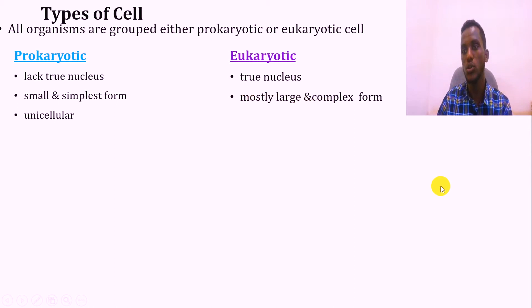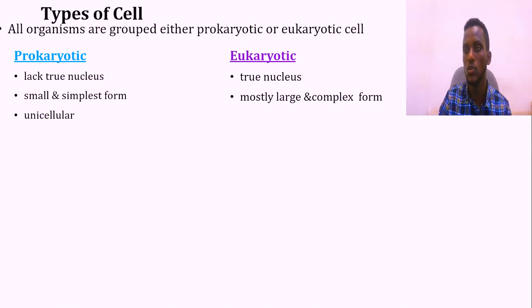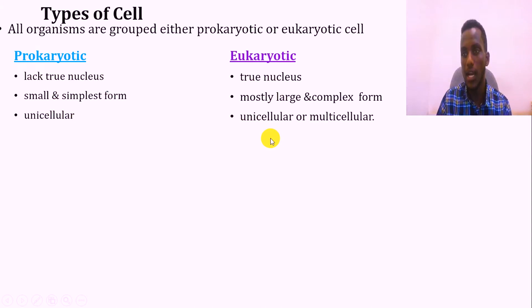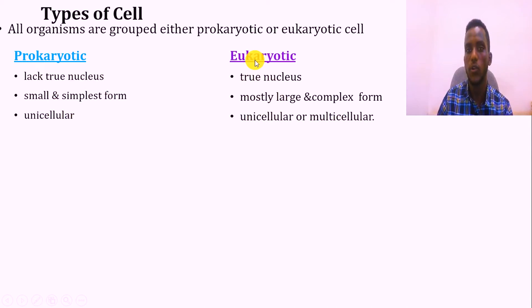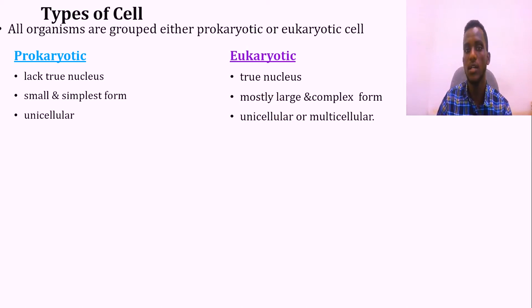Based on their cellularity, all prokaryotic cells are unicellular - that is, an organism made from a single cell. Eukaryotic cells can be both unicellular or multicellular. Unicellular eukaryotic examples include yeast, and from the kingdom Protista, protozoa are also unicellular.